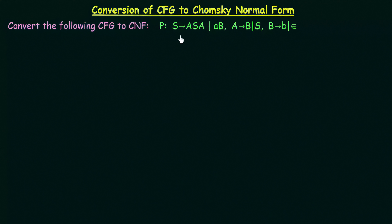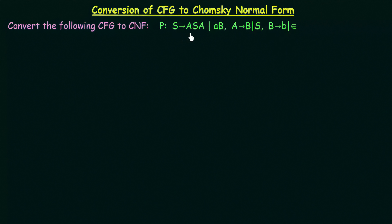Here we have a CFG given. It is a grammar whose productions are: S gives ASA and also AB; A gives B and also S; and B gives B and epsilon. S is the start symbol, the variables are A and B, and the terminal symbols are small a and small b. We have to convert this to Chomsky normal form.